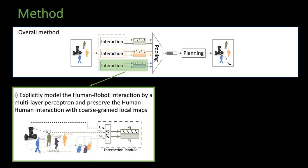Specifically, our approach models the human-robot interaction with a multi-layer perceptron and the human-human interaction with coarse-grained local maps centered at each human. Our interaction module can account for the major interactions between the robot and the crowd while scaling linearly with the number of neighbors.